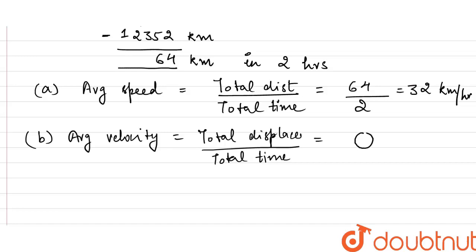So no matter how much distance he traveled, the displacement is zero and total time is two hours. So the average velocity comes out to be zero.